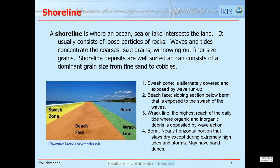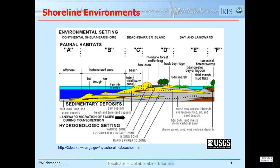The shoreline is where the ocean, sea, or lake intersects the land, and we get a lot of loose particles there. Waves and tides concentrate the coarser-sized grains and window out the finer grains — silts and shales — so shoreline deposits can be well sorted with a dominant grain size ranging from fine sand up to cobbles. This USGS diagram illustrates offshore bars, the intertidal zone, the beach with a berm, barrier islands, tidal marsh, and lagoons or bays.